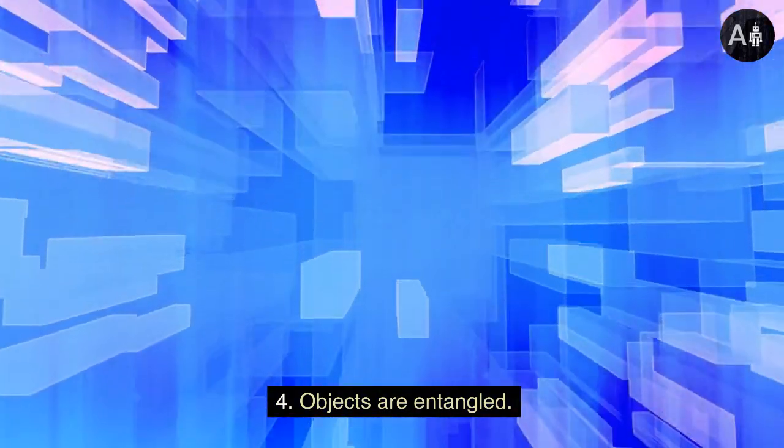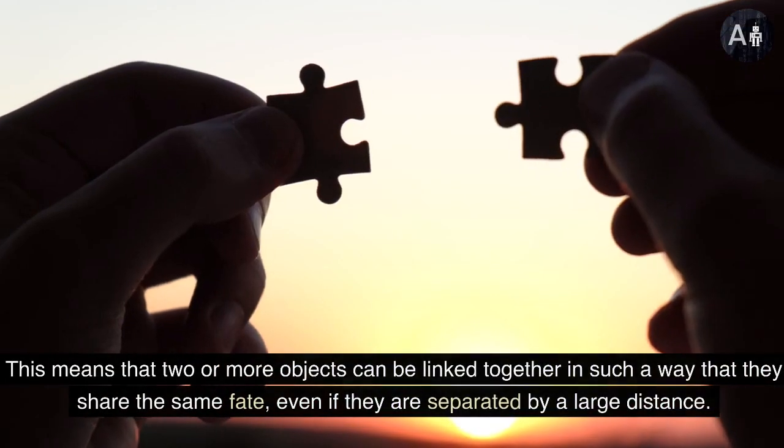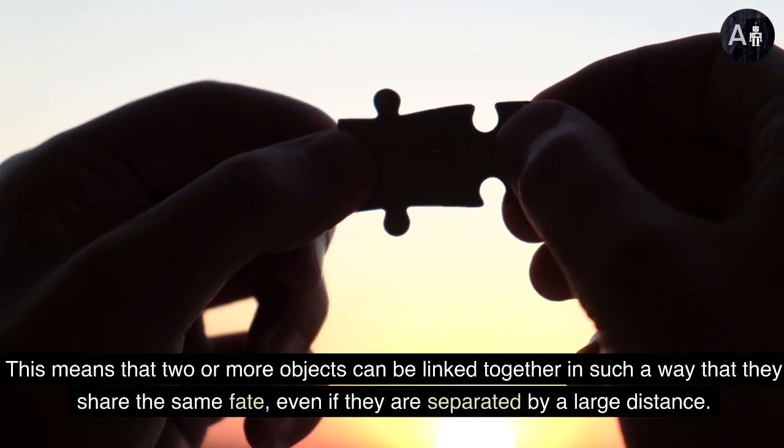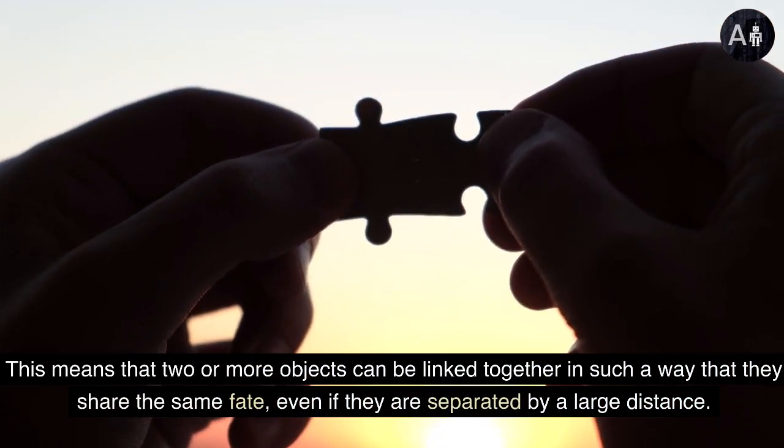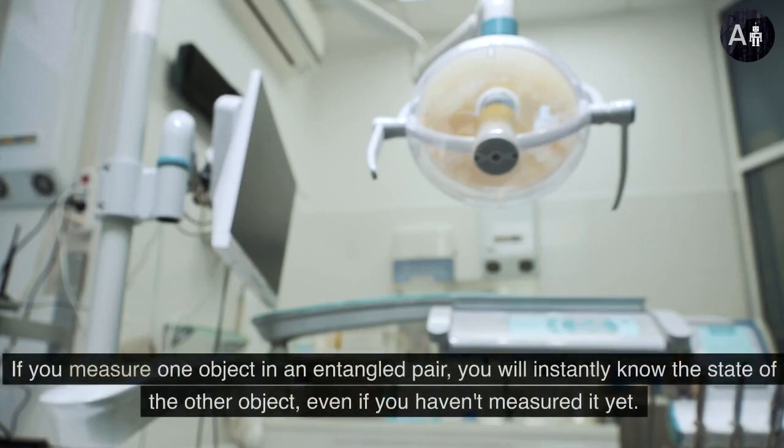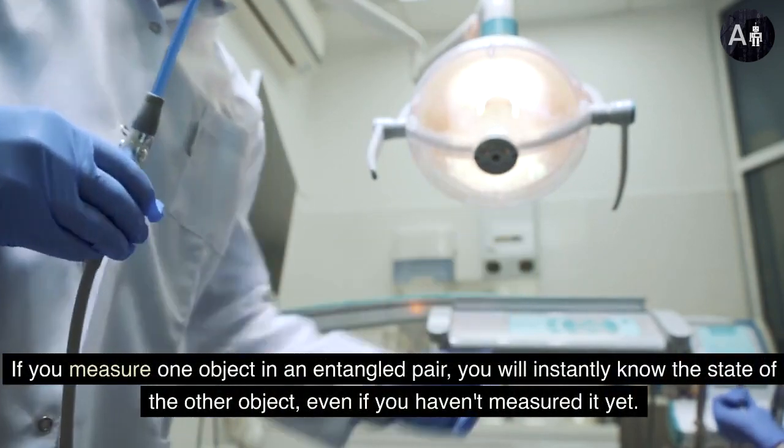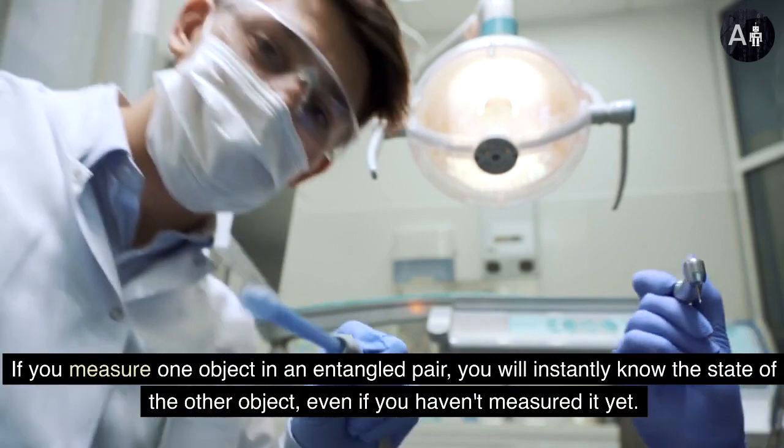Objects are entangled. This means that two or more objects can be linked together in such a way that they share the same fate, even if they are separated by a large distance. If you measure one object in an entangled pair, you will instantly know the state of the other object, even if you haven't measured it yet.